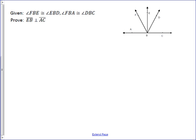So, on this proof, we want to show that EB is perpendicular to AC, which means we either need to show that this is a right angle, or this is a right angle. That's what the definition of perpendicular lines are.